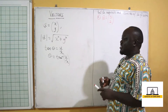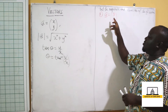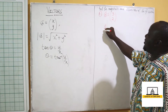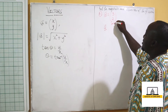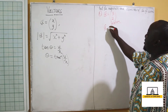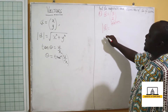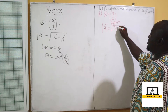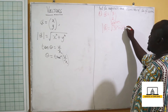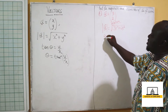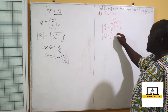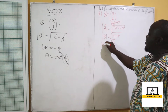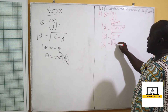So assuming I have been asked to find the magnitude and the direction of the vector a equal to (3, 2). First, I start by finding my magnitude. The magnitude of a is equal to the square root of 3 squared plus 2 squared, which gives me the square root of 9 plus 4, which is equal to the square root of 13.